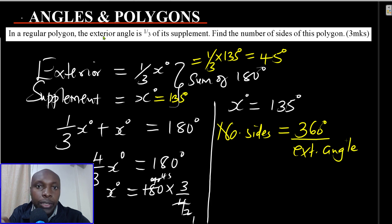This is a very important concept that the number of sides of any regular polygon is given by 360 divided by the exterior angle.